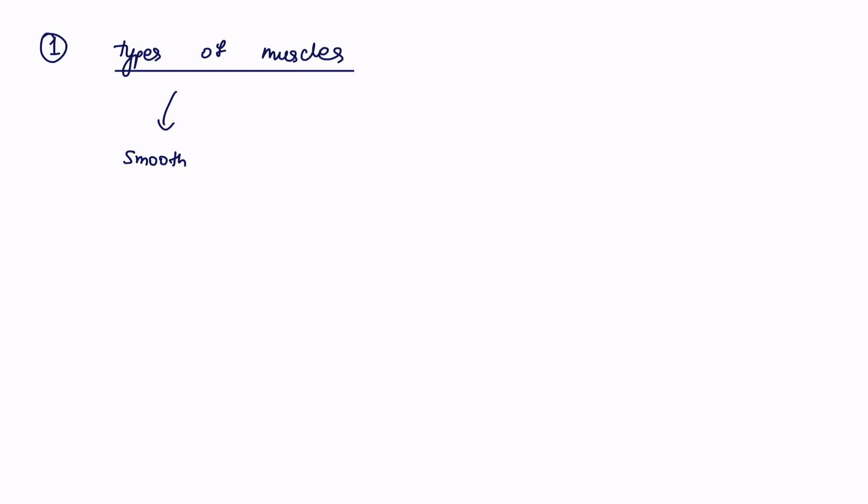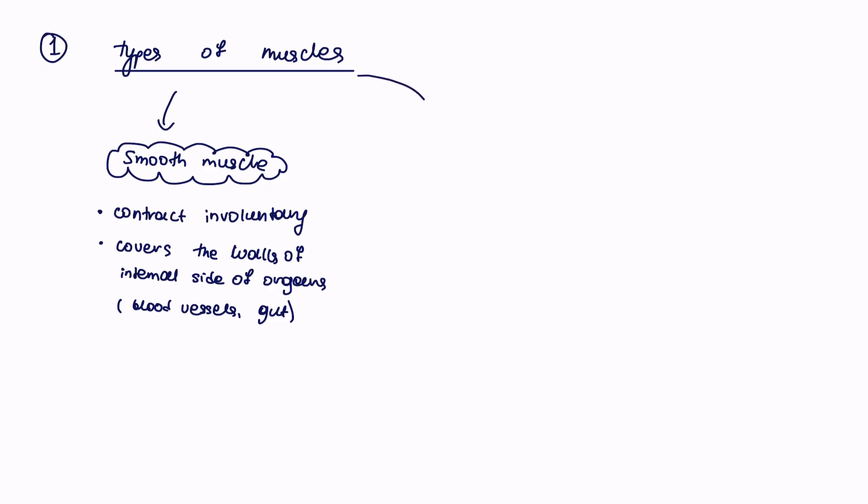To start this topic we're going to discuss the types of muscles. For A-level you need to know three separate types. We start with smooth muscles and these contract involuntarily, so that's a pretty much automatic process. The place we find them is they cover the internal sides of the organs in layers, so for example it could be inside of the blood vessels, the gut, the small intestine, liver, basically in most organs.